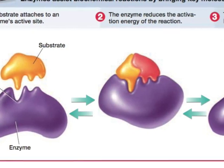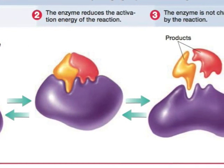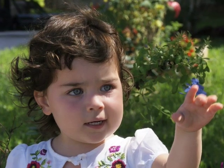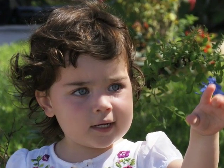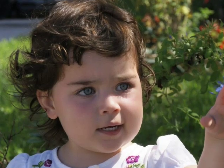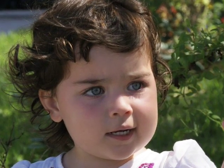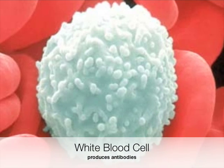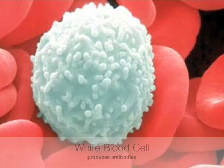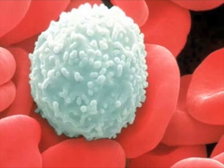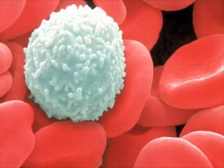Some proteins are enzymes, which promote chemical reactions. Other proteins are structural, such as keratin in your skin, fingernails, and hair, and collagen in your skin. Other proteins are antibodies, which help fight infection in your body. And there are also specialized proteins, such as hemoglobin,